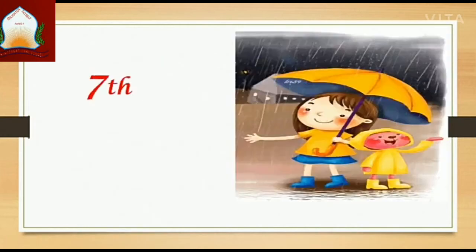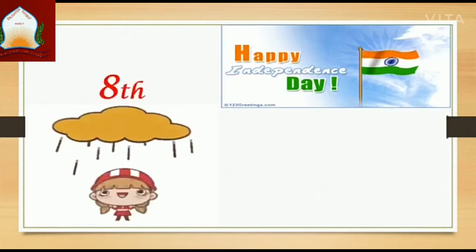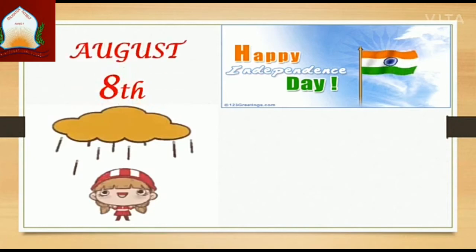Now comes the seventh month of the year, July. It has 31 days. The eighth month of the year is August. It has 31 days.